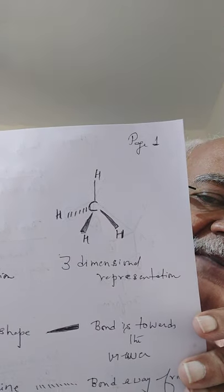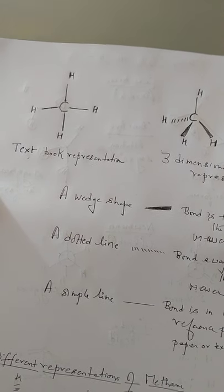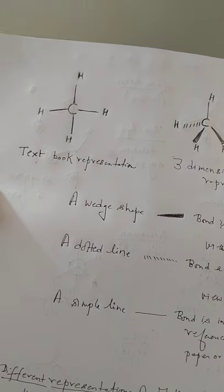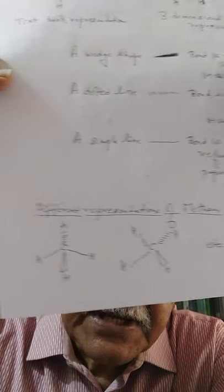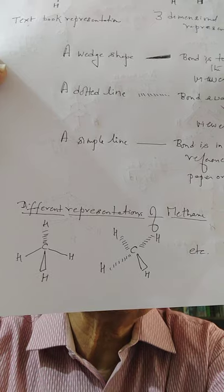Before that, let us quickly review what we have done yesterday. We talked about methane as a textbook representation, then the perspective formula and its conventions — a wedge shape indicates the bond is towards the viewer, a dotted line means the bond is away, and a simple line means it is in the plane of reference. Carbon always forms part of the plane of reference. We can represent the same molecule in different perspective formulas depending on how we are viewing it. Then we talked about carbon with four different groups or atoms attached, which we called a chiral carbon.